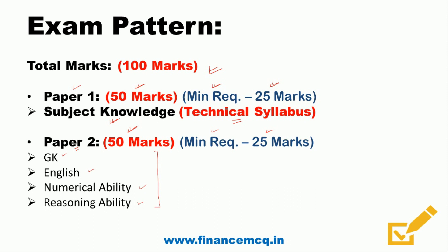Paper 2 will consist of GK, English, Numerical Ability, and Reasoning Ability. The exact marks allocated to each section have not been mentioned. For example, GK could be 20 marks with English, Numerical, and Reasoning at 10 each; or GK and English at 15 marks each and Reasoning and Numerical at 10 each. I suggest you put more focus on GK and English in Paper 2.